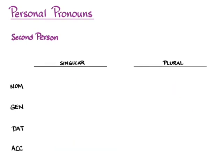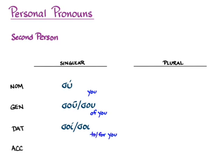Let's go on to the second person. In the nominative for second person singular we get su for 'you.' In the genitive and all other cases of the second person singular we get emphatic and unemphatic forms again: the non-enclitic sou and the enclitic sou for the genitive; in the dative soi and soi for 'to' or 'for you'; and in the accusative se and se for any accusative use. Here it's just the accent that makes the difference — there isn't an extra letter as in the first person pronouns.